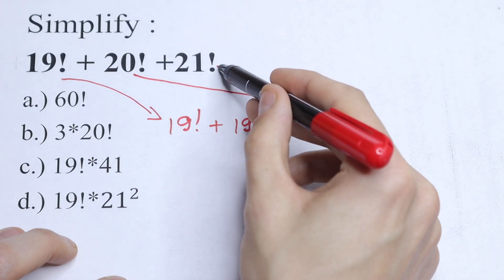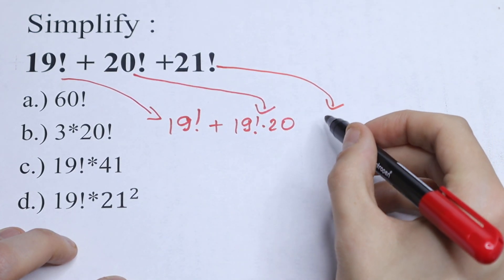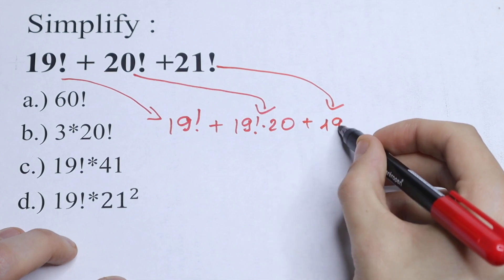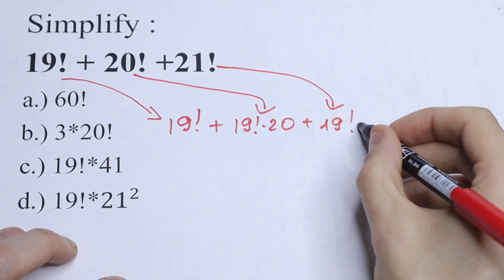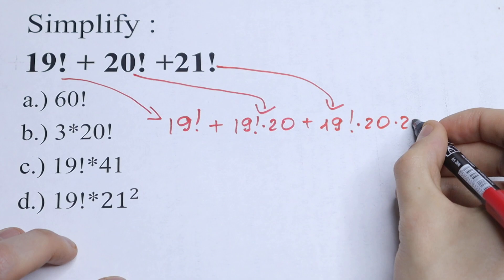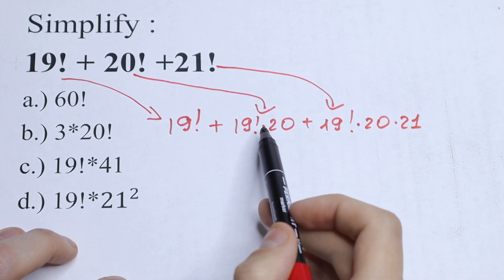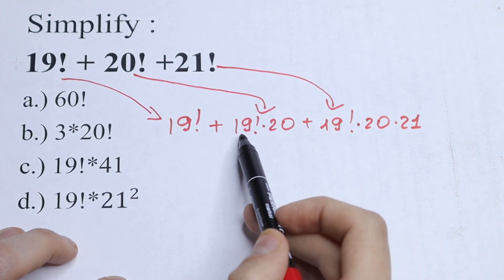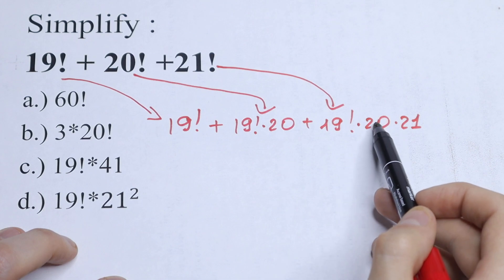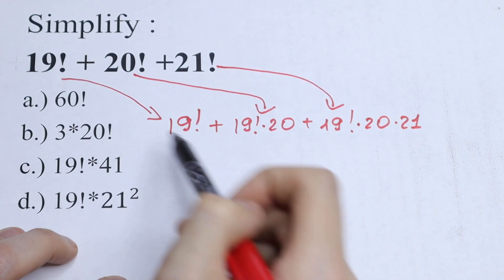And let's write this 21 right here as of course 19 factorial, but we need to write our 20 and times 21. So we need to write right here 20 and right here 20 and 21, and this will be the same.